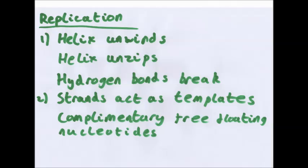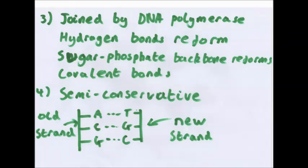Step two, both strands act as a template for free floating nucleotides to attach, yet again complementary. So if you have an open strand with the bases A, T, G, the nucleotides that will join to it will be T, A, C. Step three, the two strands are joined together at the bases by DNA polymerase enzyme. The hydrogen bonds reform. Also the sugar phosphate backbone reforms, and these are covalent bonds.